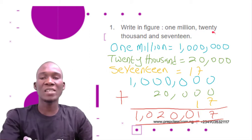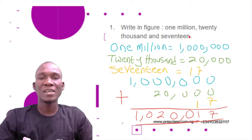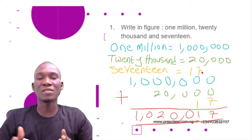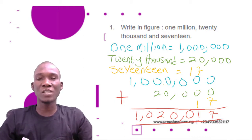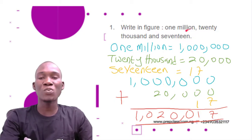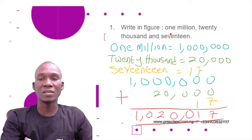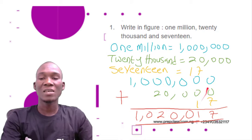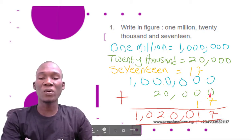Now the last part is seventeen. Seventeen is a number, so writing seventeen in figures is 1-7, giving us seventeen. Now when we combine each of these figures we are going to get the figure expression for one million twenty thousand and seventeen. So we write one million plus twenty thousand plus seventeen.